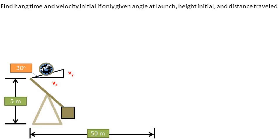In this problem, we have a trebuchet with a launch angle of 30 degrees, a height at launch of 5 meters, and a distance traveled of 50 meters. We want to find the hang time and initial velocity.